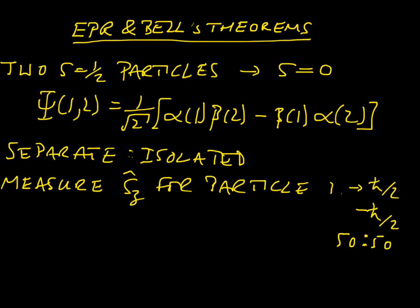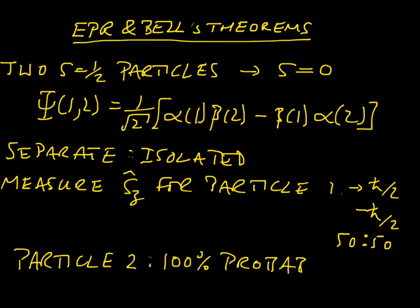What happens here is what really bothered Einstein, and a lot of other physicists who are unhappy with quantum mechanics. Having made that measurement, we have now changed the result of measuring particle 2. Particle 2 will now have 100% probability of the opposite spin. So by measuring particle 1, we have changed the probabilities of a measurement on particle 2 — before the measurement, each outcome was 50%. By doing a measurement in London, we have changed the probabilities of a measurement in Geneva.